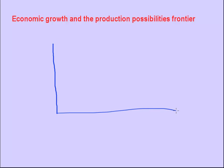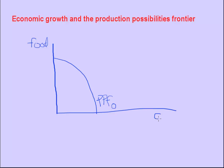Here's my production possibilities curve. Let's draw the original — that's my axis. Here's my production possibilities curve. Let's call it PPF zero for the original one. What should we put on our axes? Should we try food and clothing again? It doesn't matter which one we have food on, which one we have clothing. I'm going to put food up there, clothing down here.